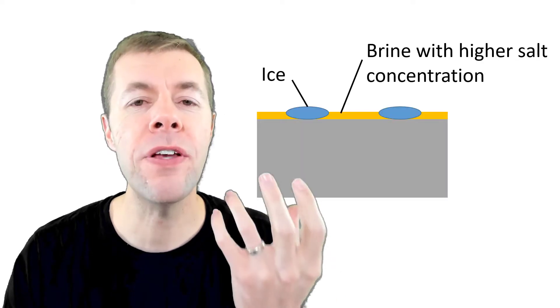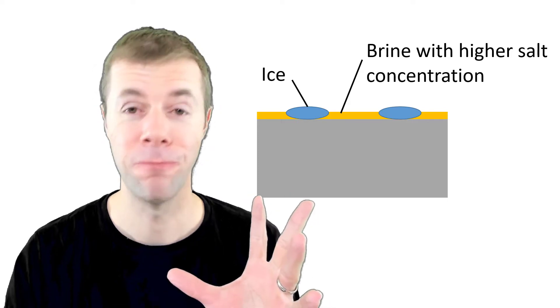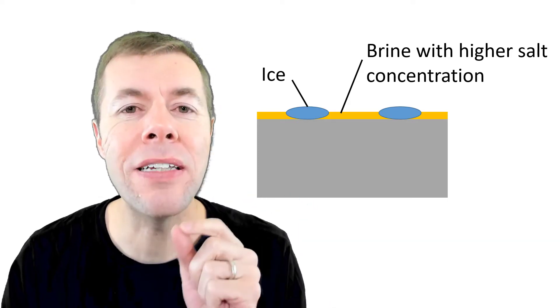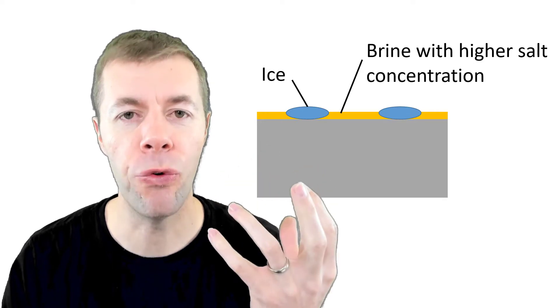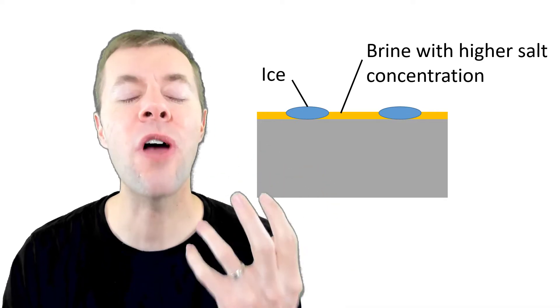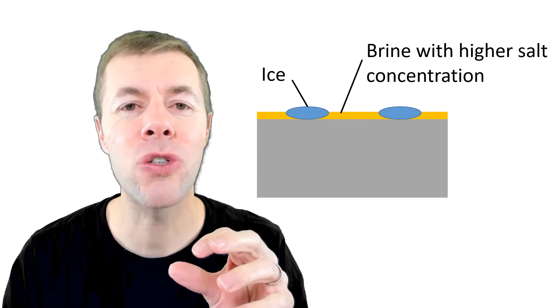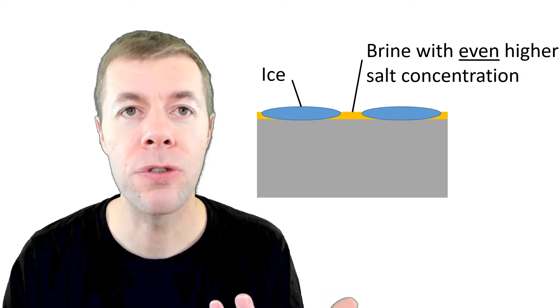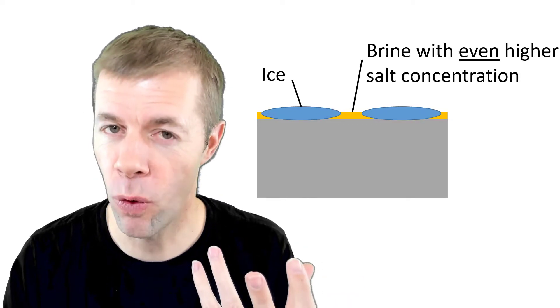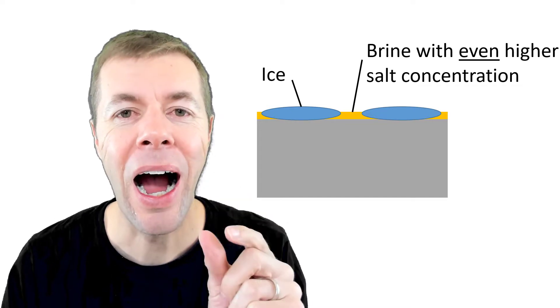So over time when this ice forms, there's no salt in the ice. Doesn't happen. The salt stays in solution and the ice is just pure frozen water. So in these other areas where there's no ice, you actually get higher concentration of brine. It gets saltier. As more ice forms, it gets harder for the ice to form, but then the concentration of the brine gets even higher.